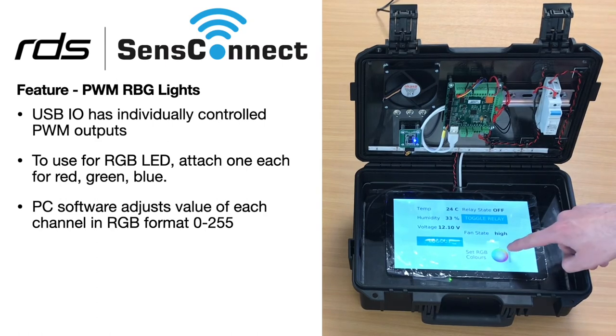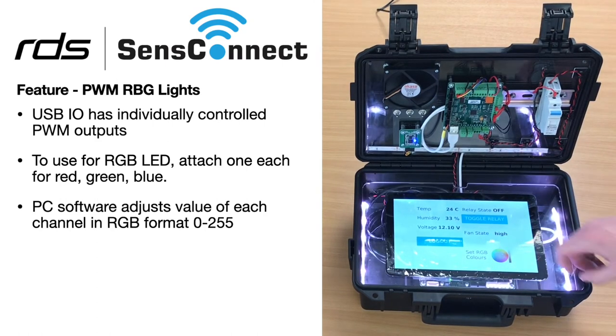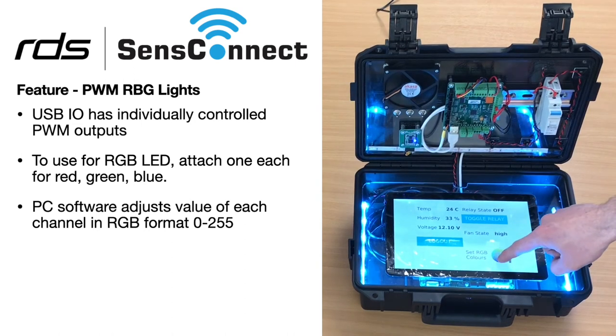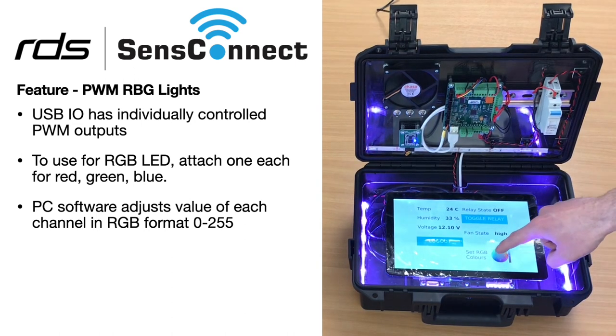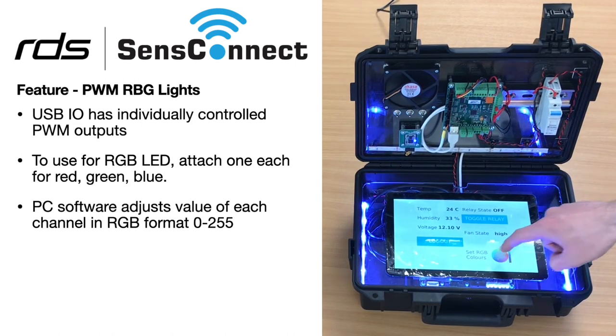We also have some RGB lights attached to the USB IO. As you can see, when I change this setting here, we get full RGB control.